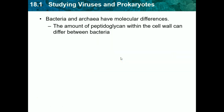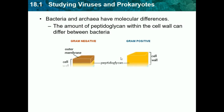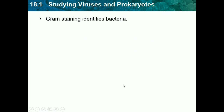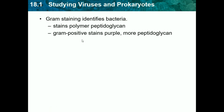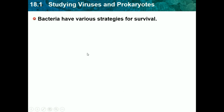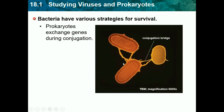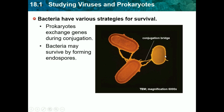Bacteria and archaea have molecular differences. The amount of peptidoglycan within the cell wall can differ between bacteria. Archaea have different lipids entirely. Gram staining identifies bacteria by staining peptidoglycan — gram-positive stains purple and has more peptidoglycan, though this is not critical to know. Prokaryotes exchange genes during conjugation, where prokaryotes form little conjugation bridges and exchange genes between each other. Bacteria may also survive by forming endospores, though that's another detail we don't need to know in depth.